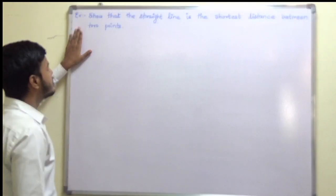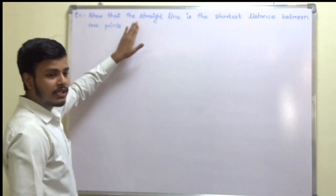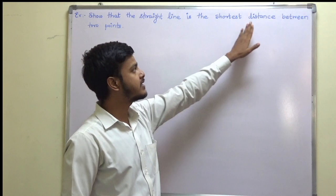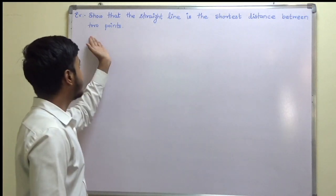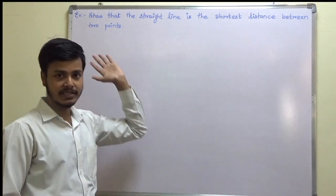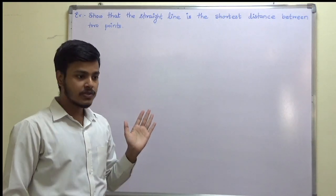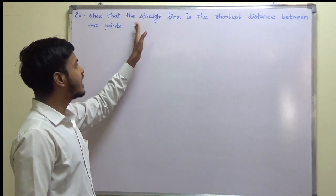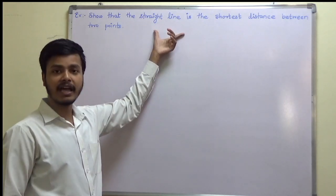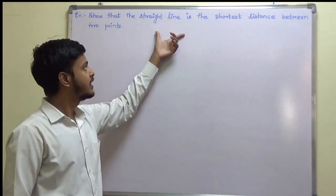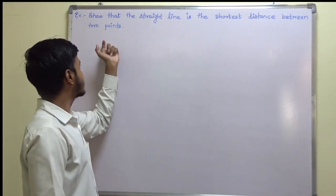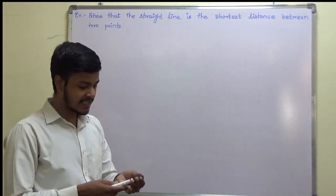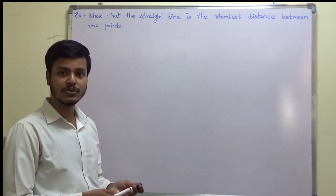This problem says: show that the straight line is the shortest distance between two points. So we are given a statement and that statement we have to prove — that the straight line is the shortest distance between two points. So what exactly are we going to do here?